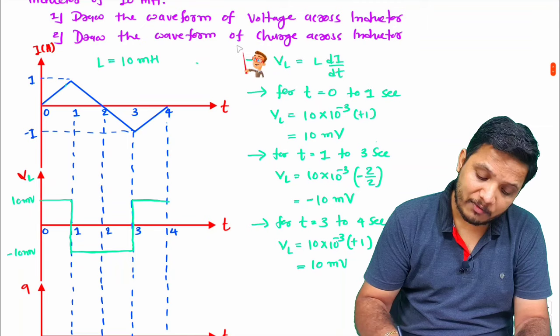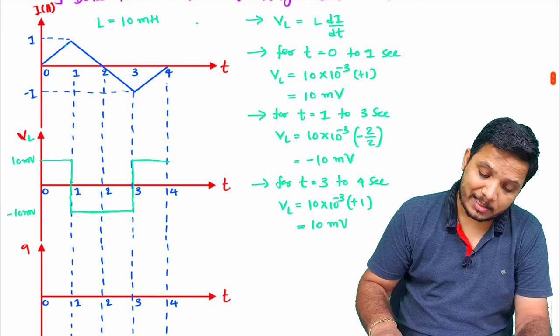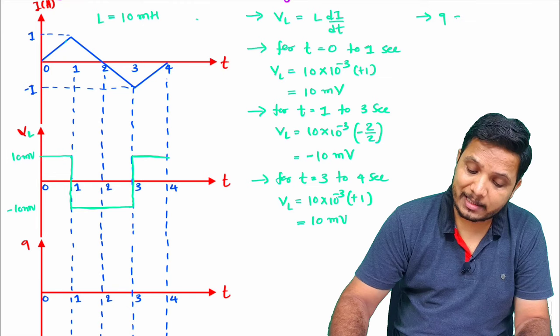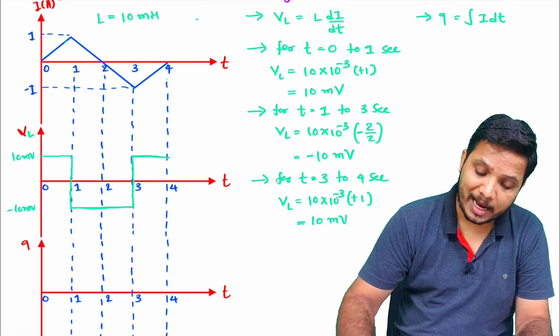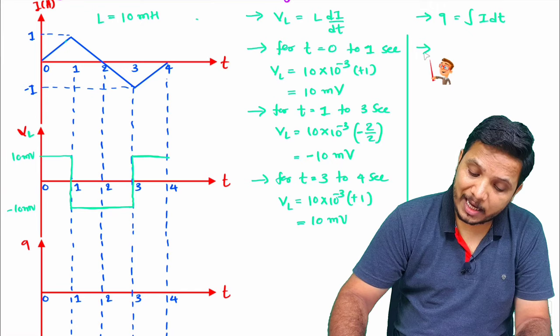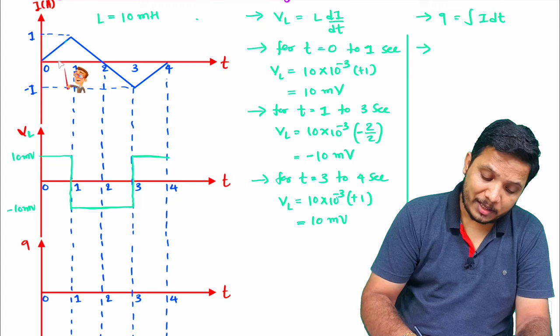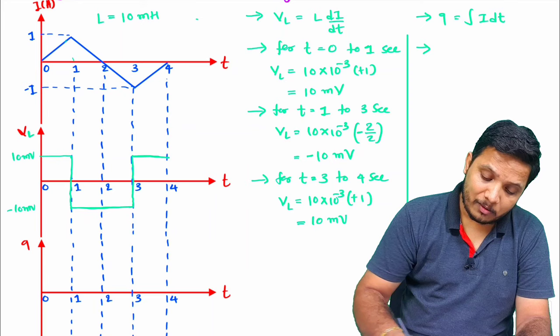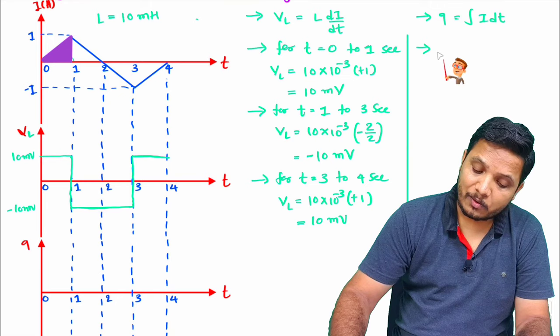Now for the second part — drawing the waveform of charge across the inductor. To calculate charge, one should know that charge Q = ∫i·dt. When calculating charge during any interval, it is simply the area under the current waveform for that interval.